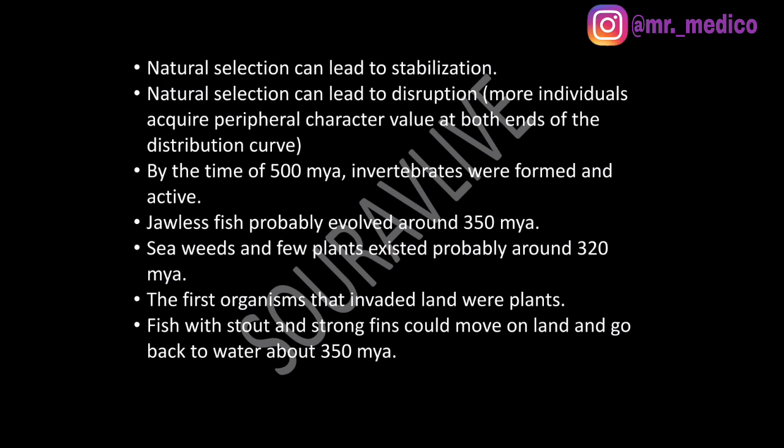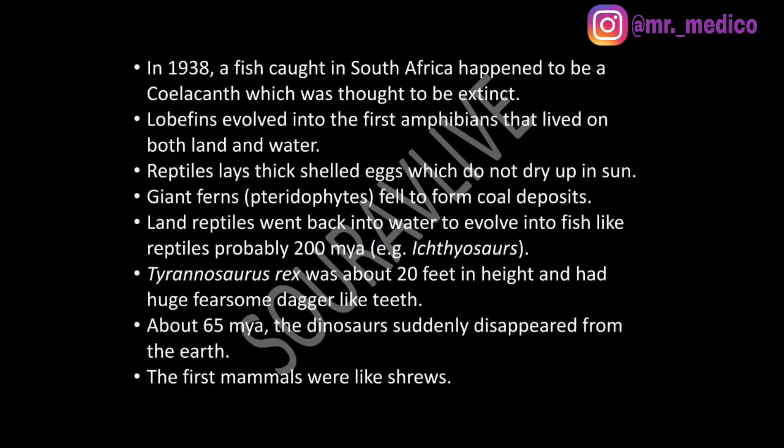By about 500 million years ago, invertebrates were formed and active. Jawless fish probably evolved around 350 million years ago. Seaweed and a few plants existed probably around 320 million years ago. The first organisms that invaded land were plants. Fish with stout and strong fins could move on land and go back to water about 350 million years ago. In 1938, a fish caught in South Africa turned out to be a coelacanth, which was thought to be extinct.